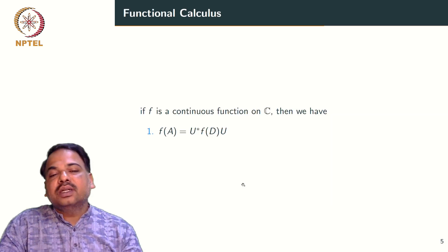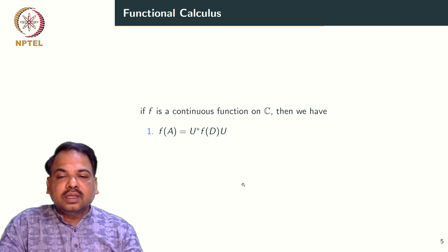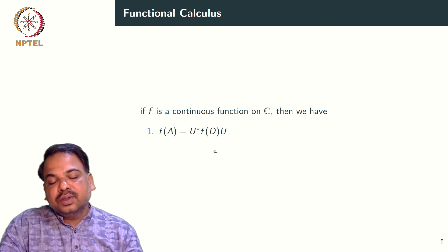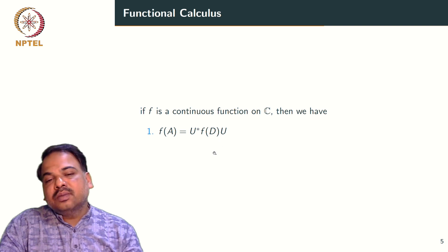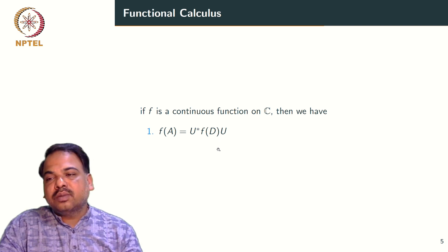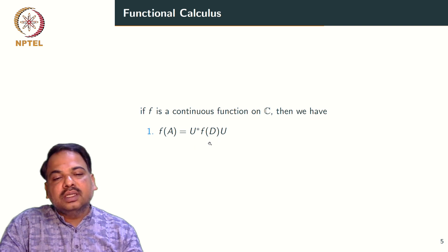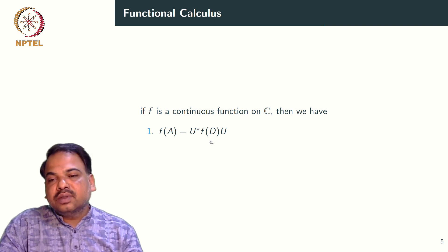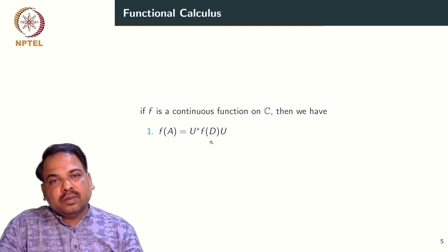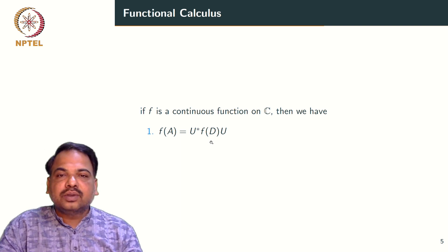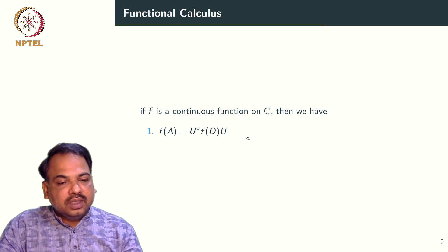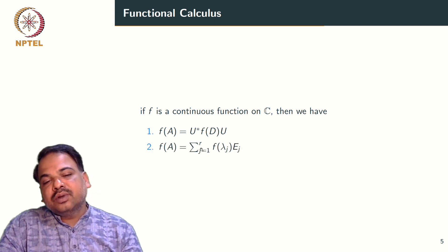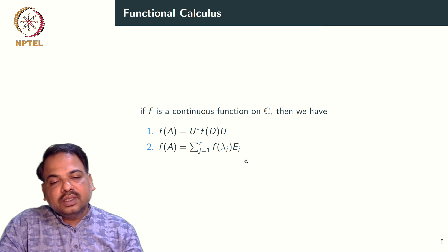And further, if f is a continuous function on C, then we can say that f of A can be written as U star f of D U, where D is a diagonal matrix with diagonal entries lambda 1, lambda 2, up to lambda n. In this case, it is easy to find out f of D which is a diagonal matrix with diagonal entries f of lambda 1, f of lambda 2, up to f of lambda n. So in the second case, f of A can be written as follows: summation j equals 1 to r, f of lambda j Ej.